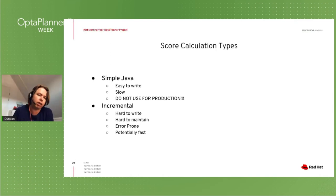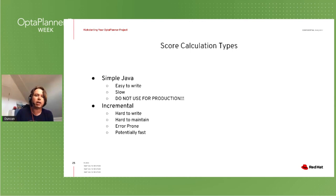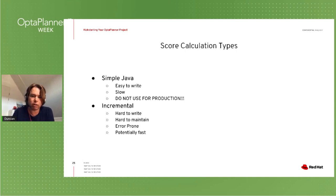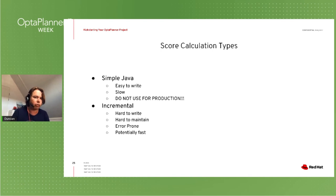To recap: incremental Java means you have a solution with a score, you move to another solution by applying a small change, and you only calculate the delta — not the entire problem from scratch. That's very hard to write and very hard to maintain. Adding, removing, or changing constraints is extremely hard, and it's also error-prone — if you make a mistake, you get score corruption, which leads to an invalid, useless solution. Not recommended. I've seen too many customers use it and then have to retrofit something else after two months of development.